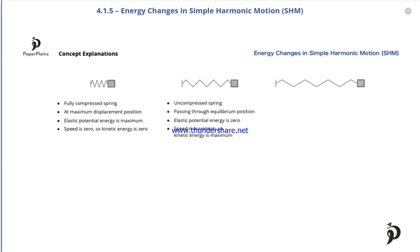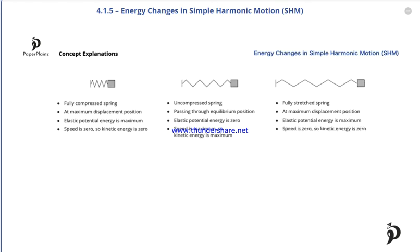After passing through the equilibrium position, the spring begins to stretch and the object starts to slow down. At some moment, the spring becomes fully stretched. This is the other maximum displacement position of the object. Since the spring is fully stretched, elastic potential energy is at its maximum. The object stops for a moment, so kinetic energy here is zero.